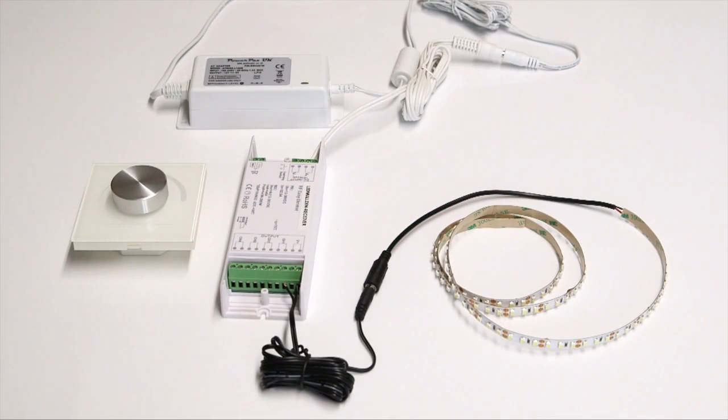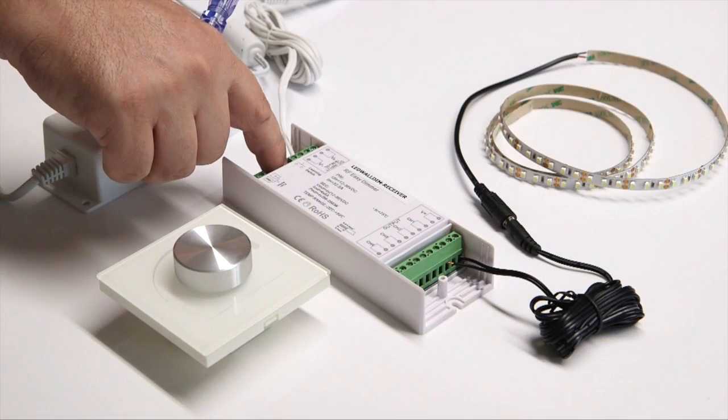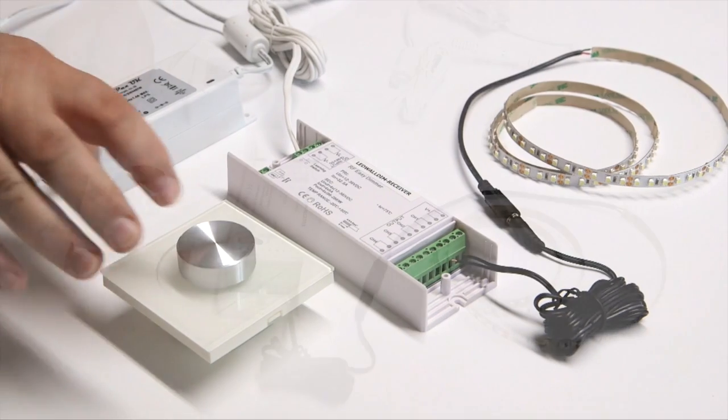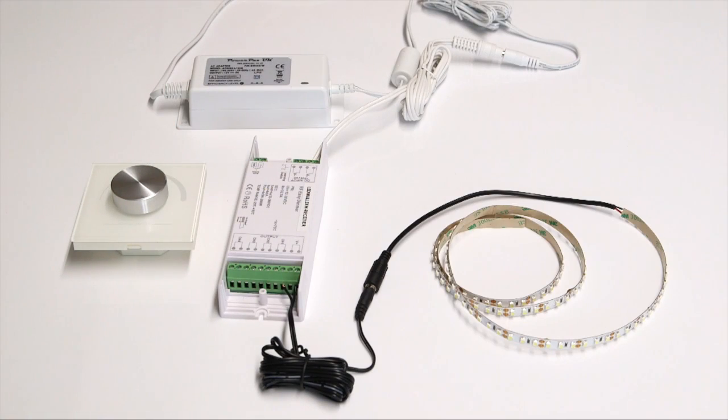Then pair the wall mounted dimmer and the receiver unit together. Instructions are supplied but this is simply done as follows. Briefly press the learning button on the receiver. Then press the dial in on the wall switch. Your LEDs will flash once to show pairing has been successful.